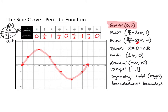The minimum value is negative 1, and it occurs at 3 pi over 2, then repeating every period. The zeros of this function occur at 0, pi, and 2 pi, and continue at every pi after that — so pi, 2 pi, 3 pi, 4 pi, and so on.